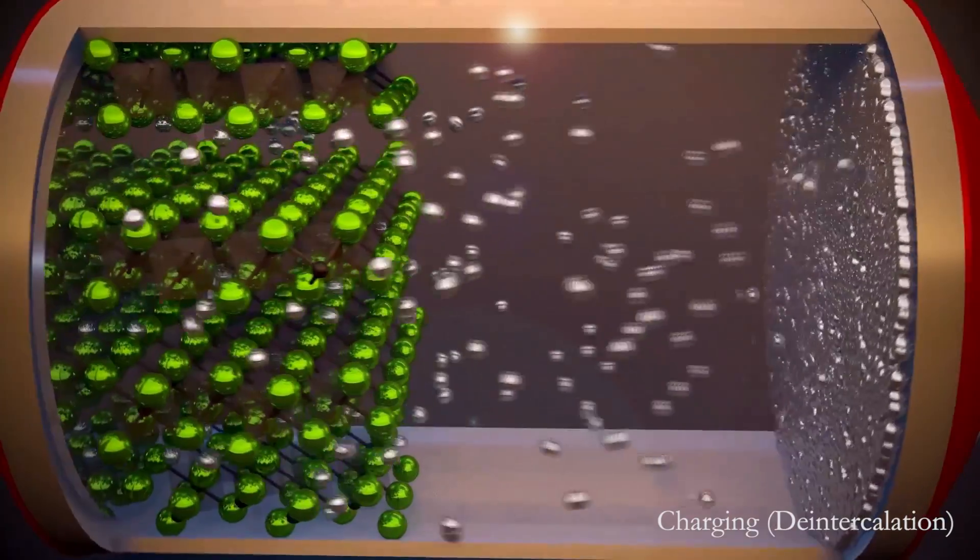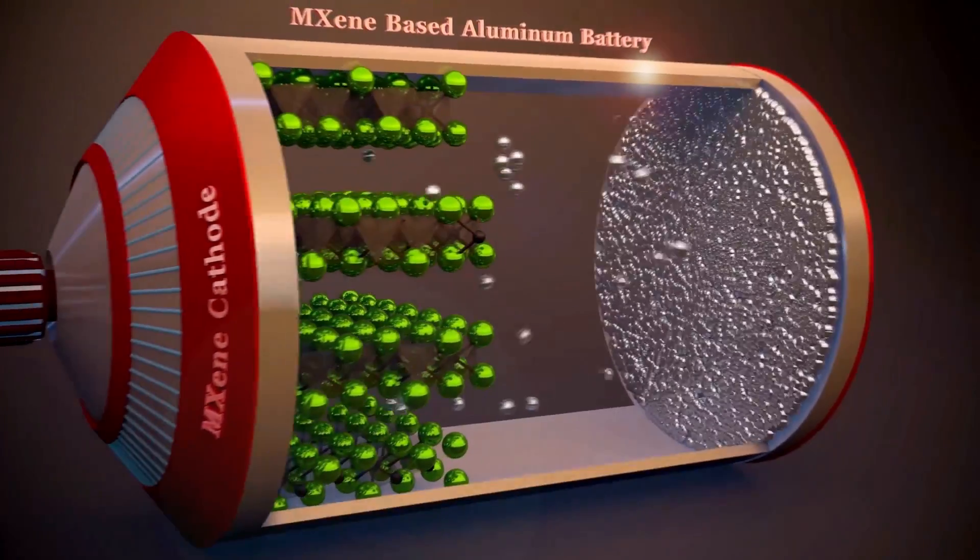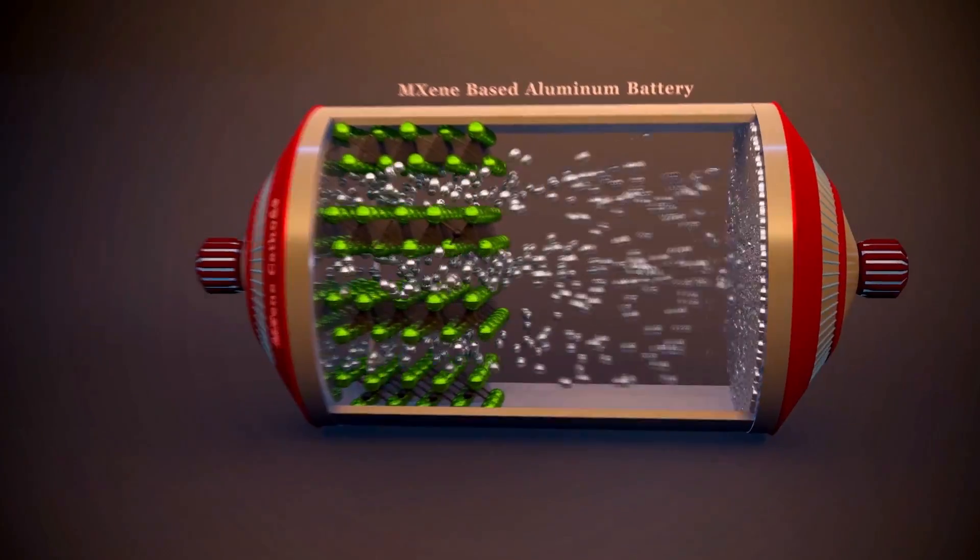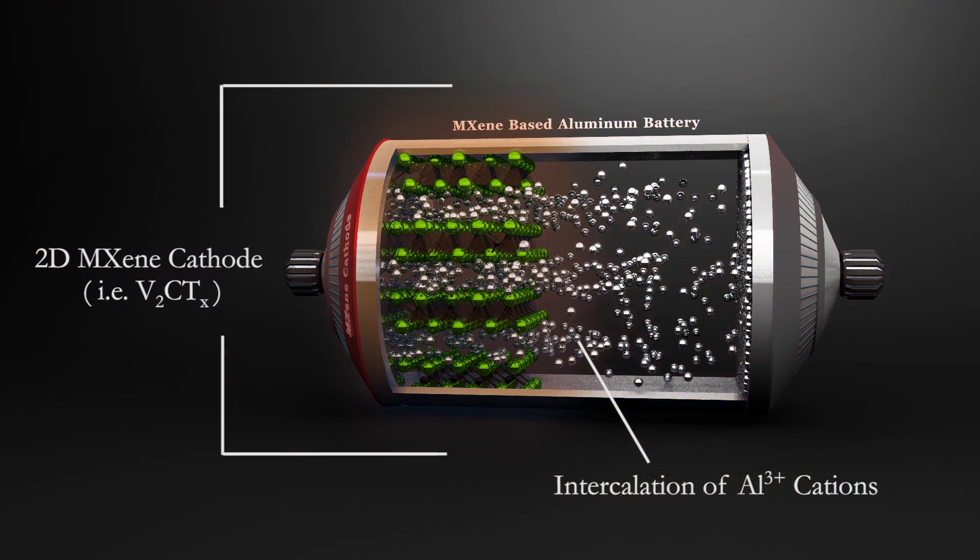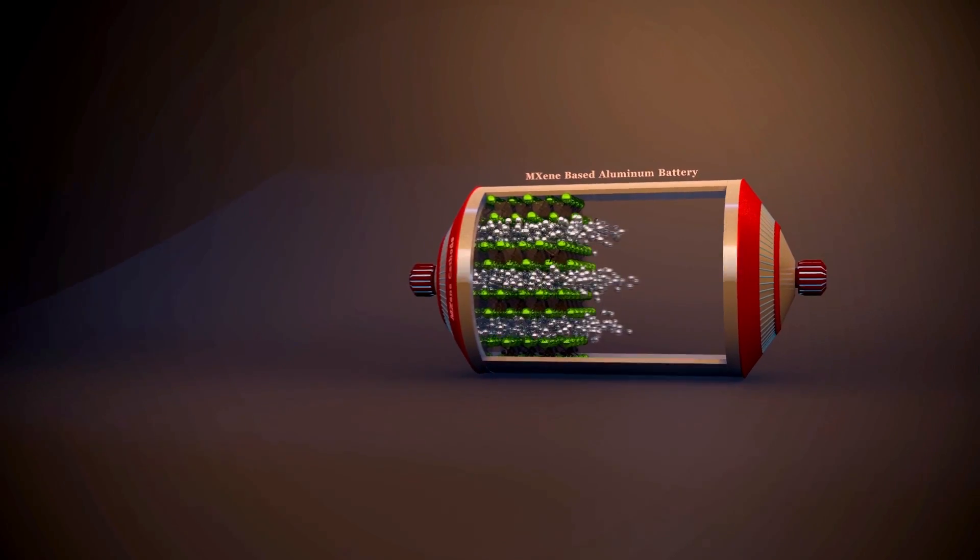In an aluminum battery with a MXene cathode, the battery operates through reversible intercalation of aluminum cations between MXene layers and the deposition and dissolution of aluminum at the metal anode.